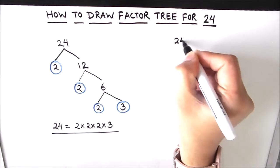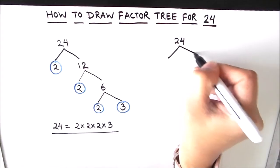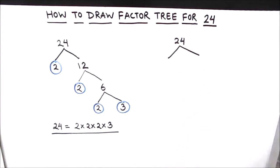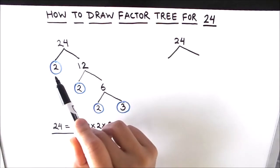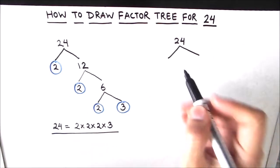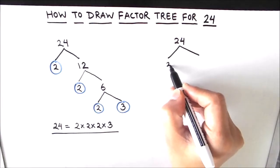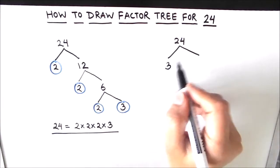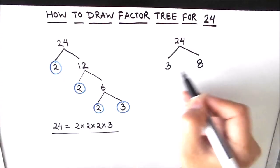Let's try and make one more factor tree for number 24. We are going to make two branches of 24, but this time, instead of taking 2, we are going to divide 24 by the next prime number, 3, to find whether it is a factor of 24 or not.